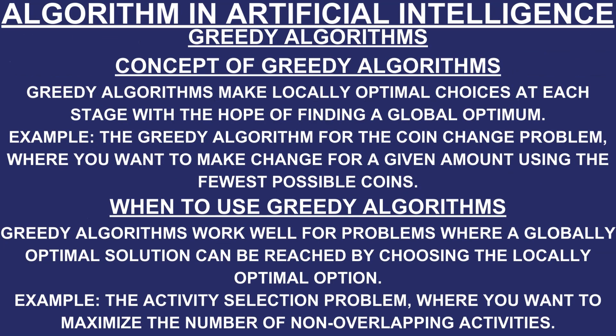Greedy algorithms make locally optimal choices at each stage with the hope of finding a global optimum. For example, the greedy algorithm for the coin change problem, where you want to make change for a given amount using the fewest possible coins. Greedy algorithms work well for problems where a globally optimal solution can be reached by choosing the locally optimal option, such as the activity selection problem where you want to maximize the number of non-overlapping activities.